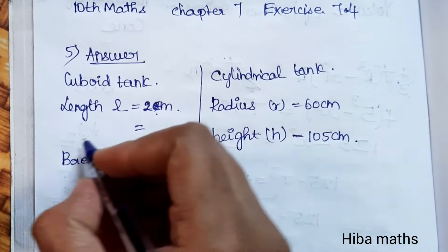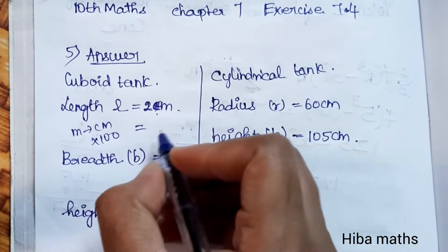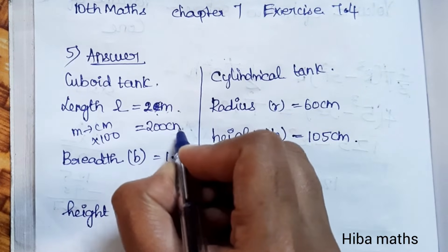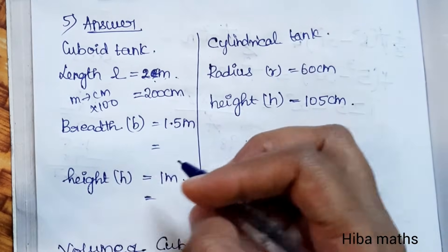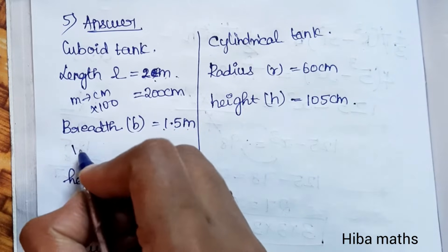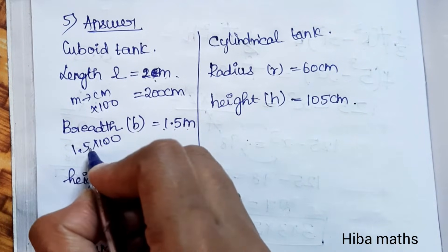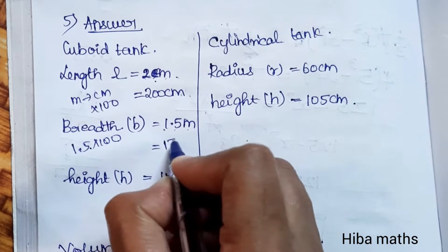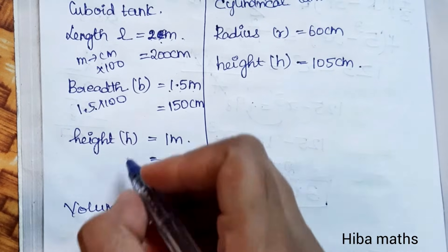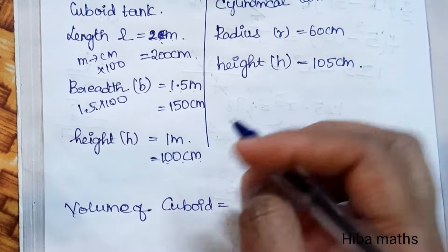Let's convert all measurements to centimeters. Length: 2 meters = 200 centimeters. Breadth: 1.5 meters = 1.5 into 100 = 150 centimeters. Height: 1 meter = 100 centimeters.